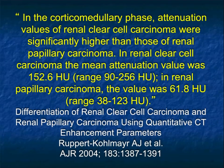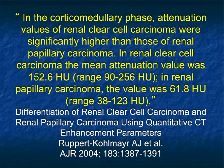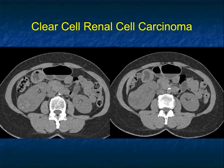In an article by Kalmar, in the cortical medullary phase attenuation values of clear cell were significantly higher than papillary — the average for clear cell was 152 and papillary was 61. There is a range, so sometimes papillaries are up to 120 and clear cells as low as 90. But in better than 90 to 95% of cases, using about 100 Hounsfield units as a cutoff — above 100 arterial is clear cell, below is papillary — you will do really well.